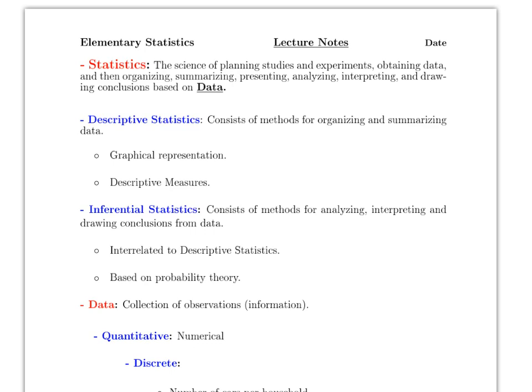Statistics is the science of planning studies and experiments, obtaining data, and then organizing, summarizing, presenting, analyzing, interpreting, and drawing conclusions. Everything is going to be based on data. Statistics is divided into two main categories: descriptive statistics and inferential statistics. These two combined technically match this full definition — it's just broken down into two parts.